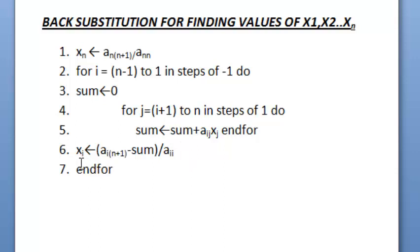Then, we find the value of Xi with the help of values of A(i,n+1) minus the value of sum which we got from here, whole divided by A(i,i). Here, our for loop ends.